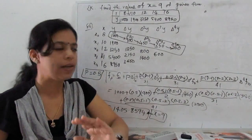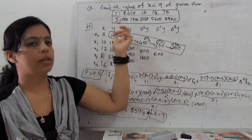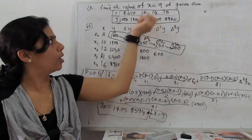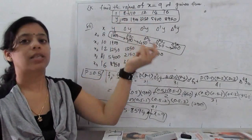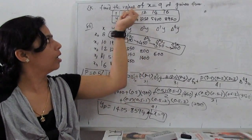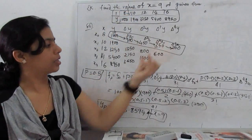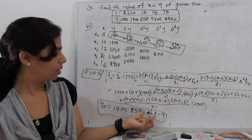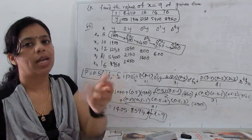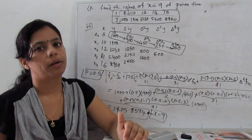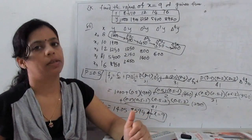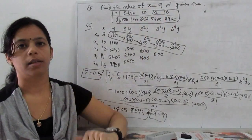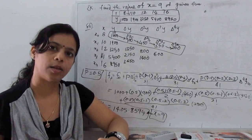Interpolation is very simple if you know how to construct the table properly. Use forward values for upper entries and backward values for lower entries. Substitute the point p = (x − x₀) / h — here h = 2, x₀ = 8, so p = (9−8)/2 = 0.5 — substitute p and the table values into the formula to get the result. That's the use of Newton's forward difference formula. In the next part, we'll cover Newton's backward difference formula for values near the end of the table.